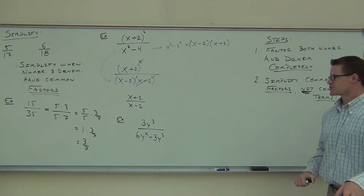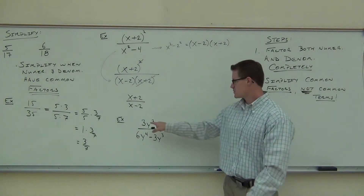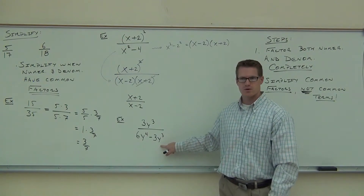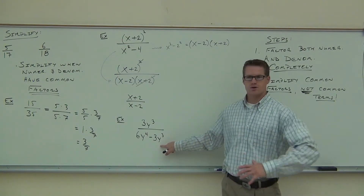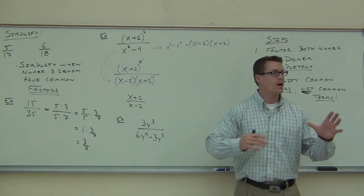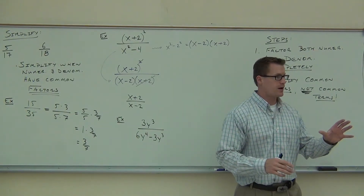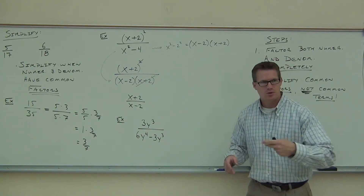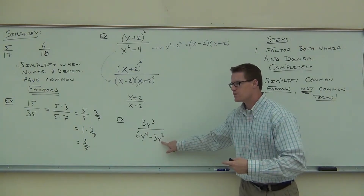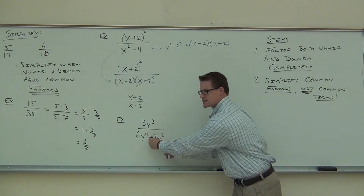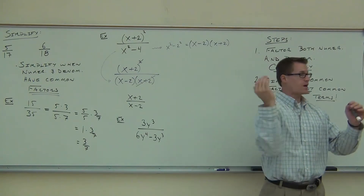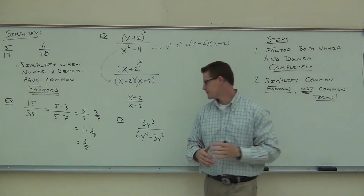Right off the bat, I've got a question for you. Would it be okay to simplify the 3y cubed with this 3y cubed? Clearly no — this has a subtraction right in front of it, so there's no way we can simplify that. We can't even do the y cubed and the y cubed, because this piece still has that subtraction right there. It's got to be completely multiplied — everything or nothing, that's the idea.